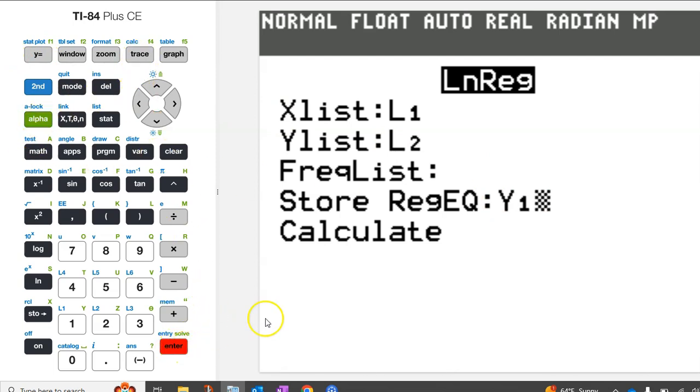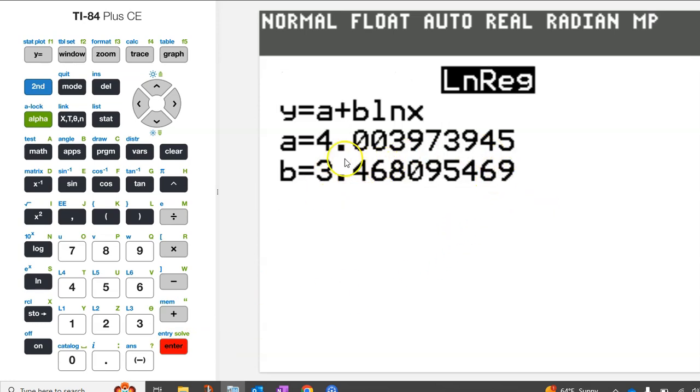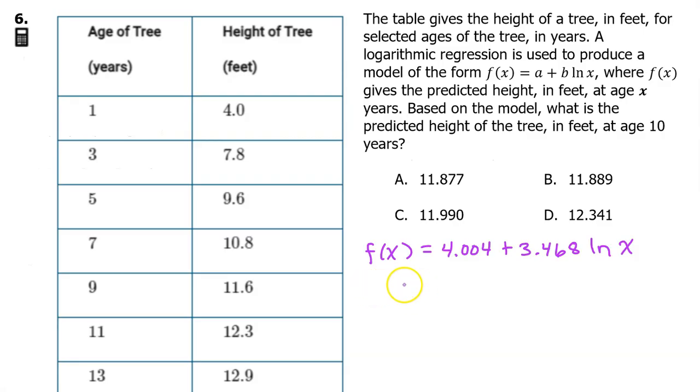Before you calculate the regression model, go down to where it says store regression equation, and we want to store the equation as y1. An easy way to make the y1 show up right here is to hit alpha trace, enter, enter. Now hit enter a couple of times, and the calculator will come up with the a value and b value of your regression model. This model gives the height of the tree after x years. We need to find the height at age 10, so we need to evaluate f at 10.